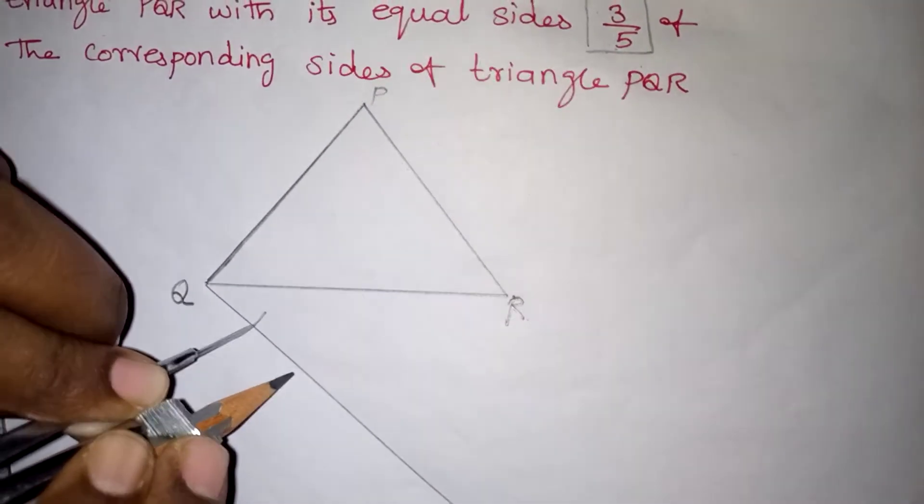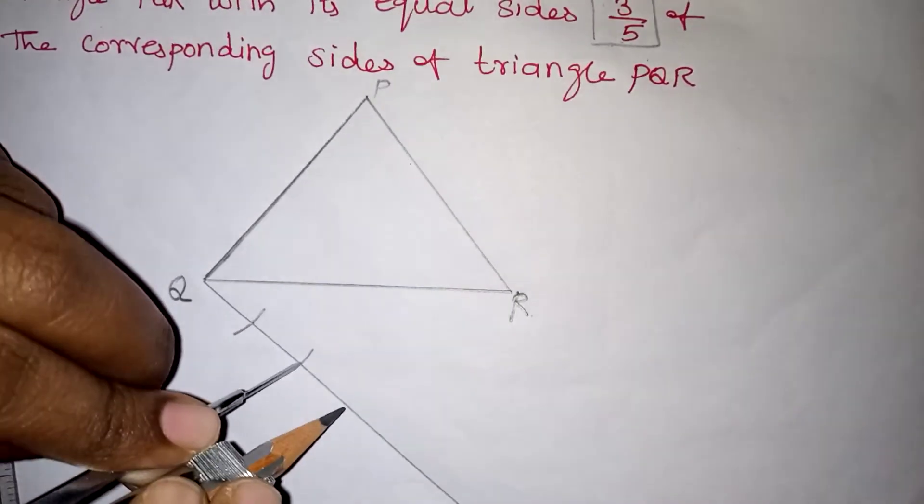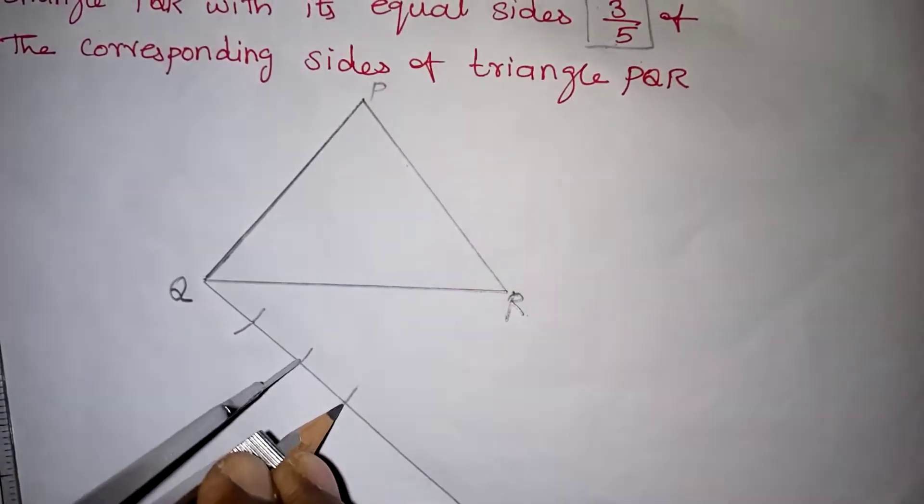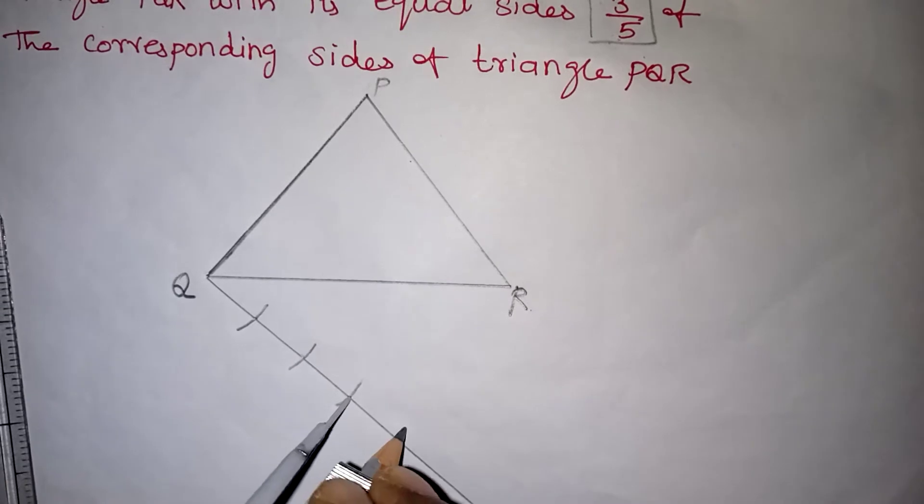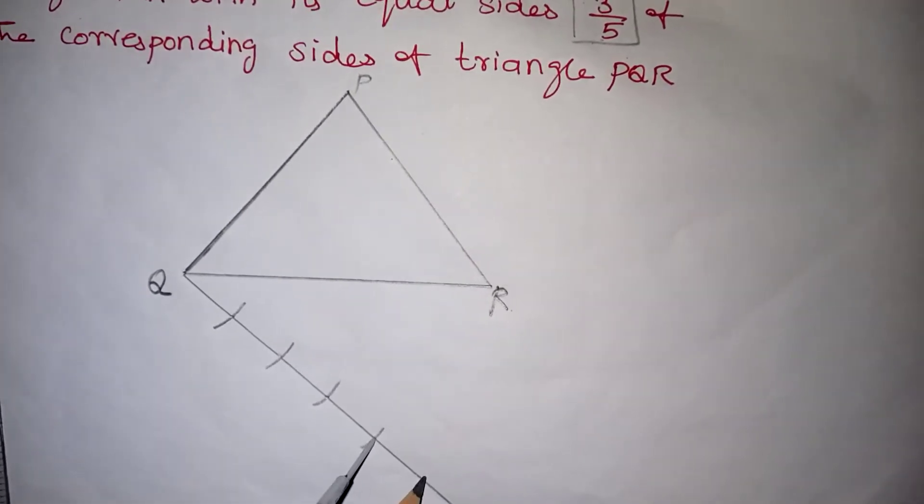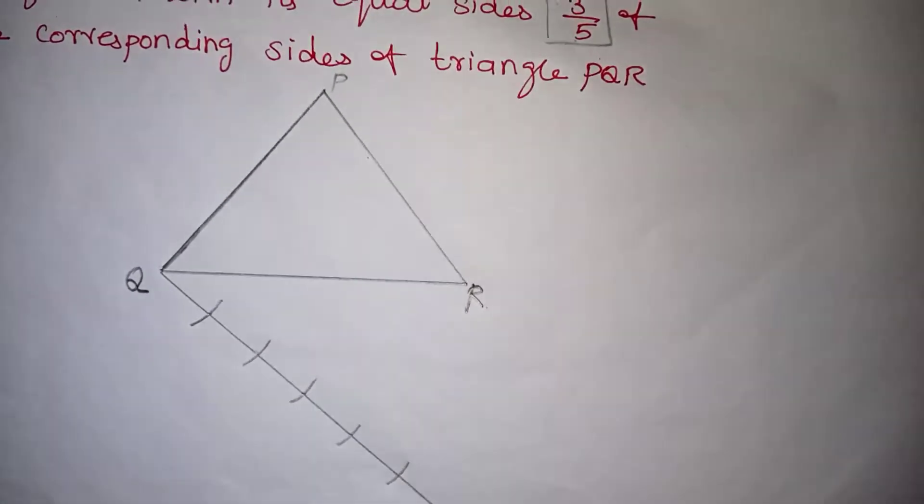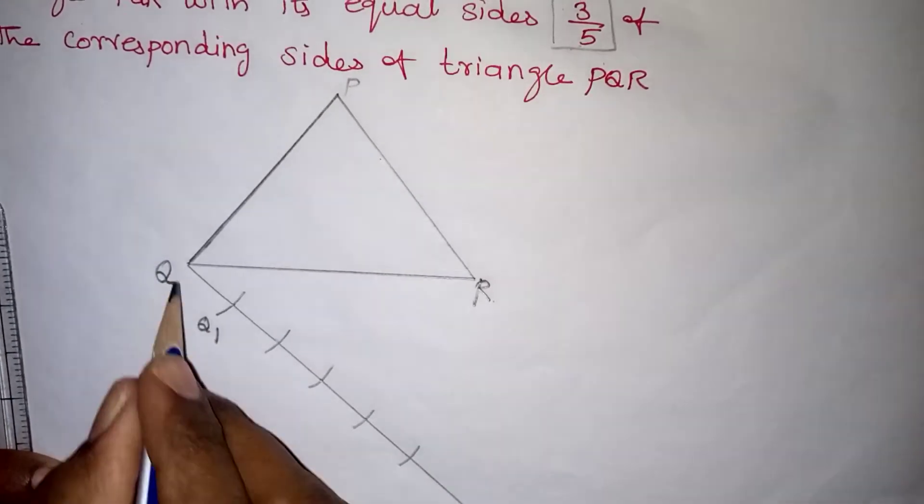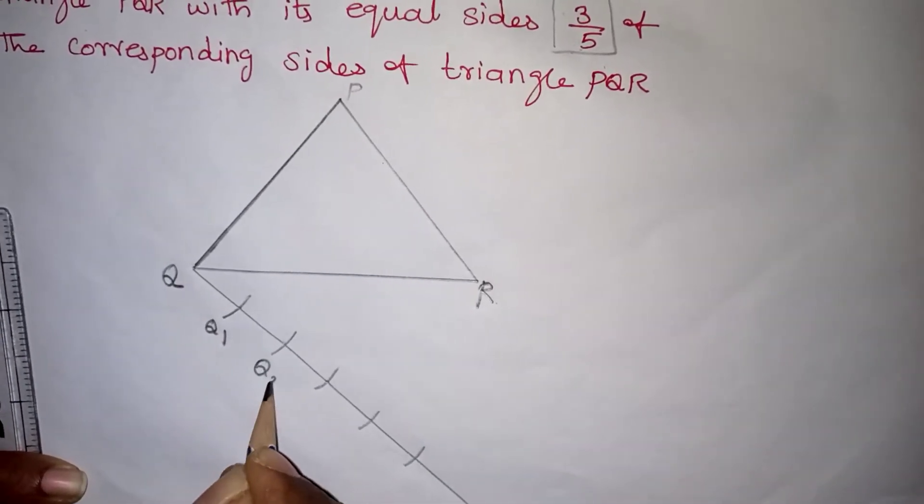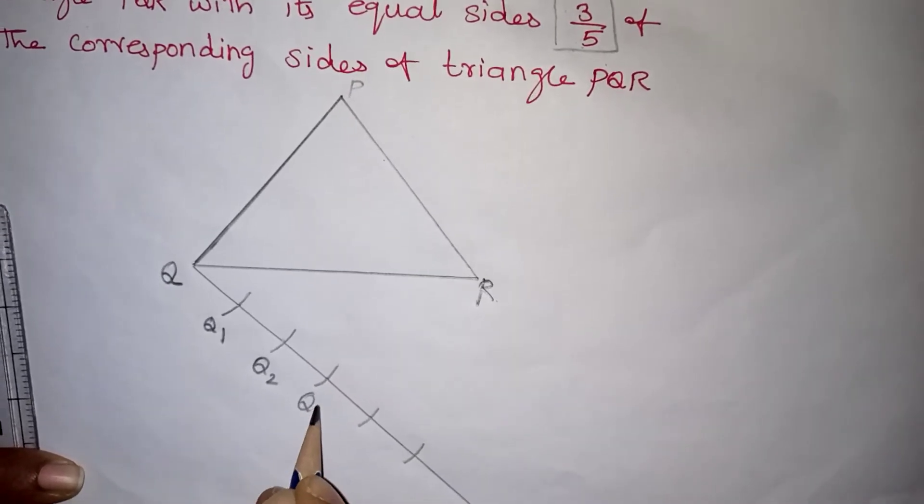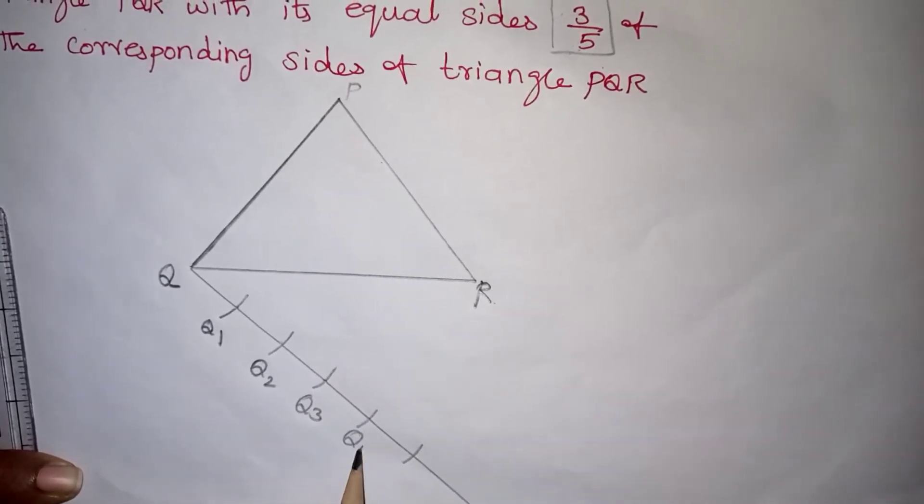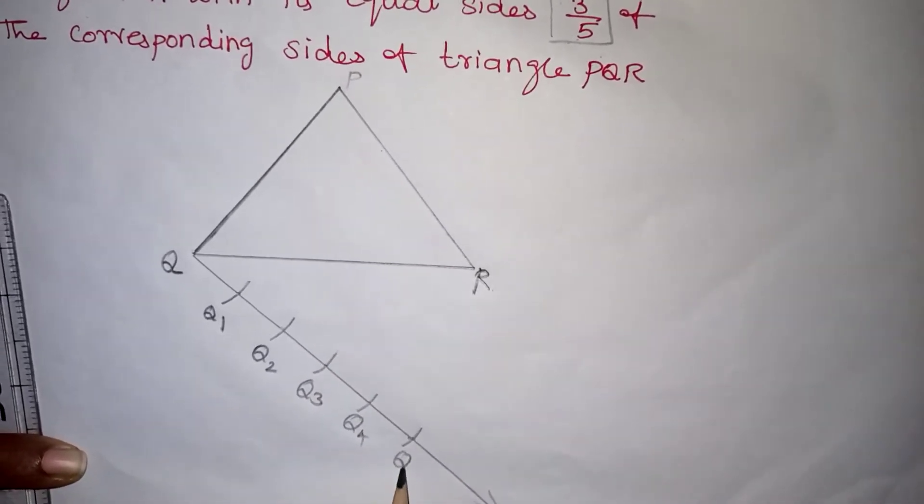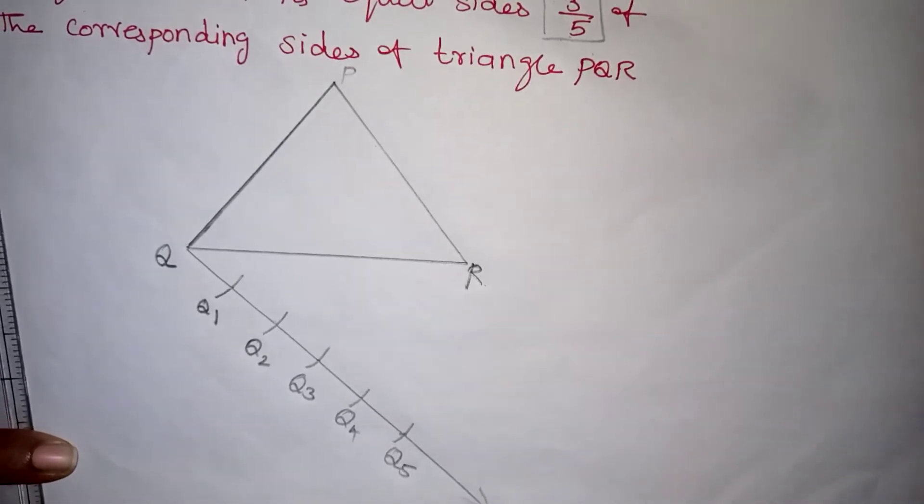This is my first arc and second arc, third arc, fourth one, and this is my fifth arc. After drawing, just name this. This is my Q1, this is Q, so this is Q1, Q2, this point is Q3, and this is your Q4, and this is your Q5.